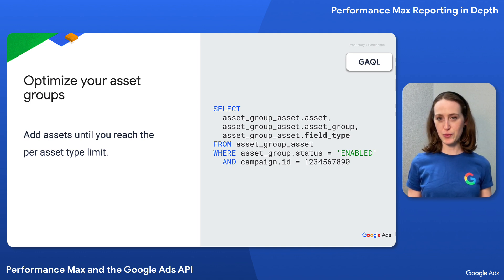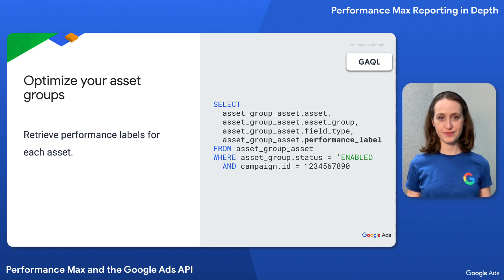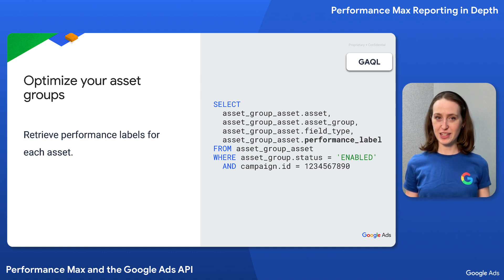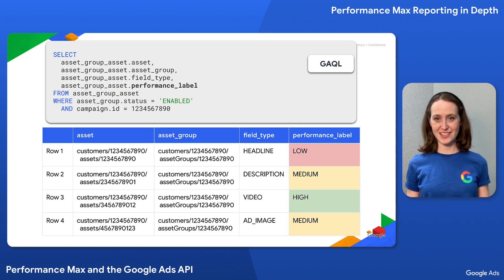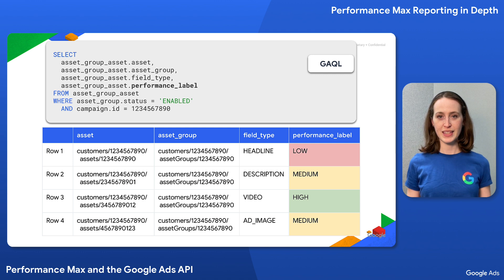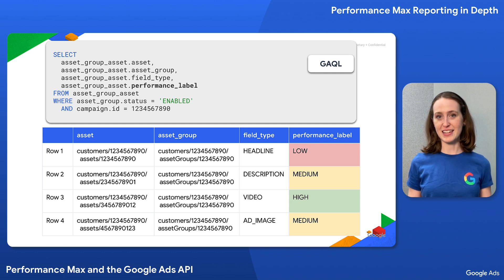Now that we have all of the info we need to identify asset groups with the maximum number of assets, all we need is the performance label. I can just update my existing query to fetch the performance label, and this way we can get everything we need at once. Note that performance labels are relative to assets of the same field type within the same asset group, so a low performance label in one asset group might mean something different than a low performance label in another asset group. The results will look something like this, where I get a row for each asset with their asset group resource name, field type, and performance label. To get more information about the assets, like the headline or description text, you'd want to either query the asset resource or look up data you've stored locally about the asset.